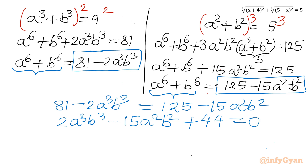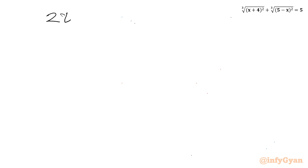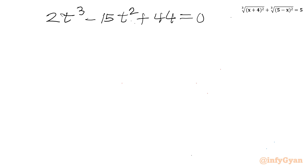Now substitution time. Let us consider t equal to a·b. So a squared b squared equals t squared, and a cube b cube equals t cubed. I can write the equation as 2t cubed minus 15t squared plus 44 equals 0.